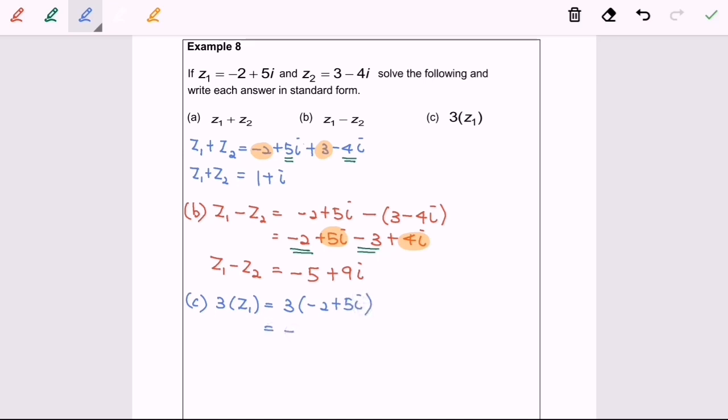We will have negative 6 plus 15i. So the answer for 3 multiplication with z sub 1 equals negative 6 plus 15i, which is a complex number. So here we are and thanks for watching.